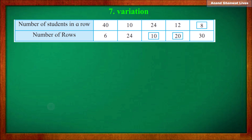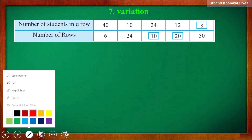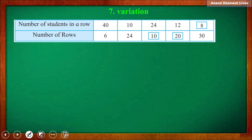The basic idea related to this chart: the value of number of students in a row changes from 40 to 10, meaning it decreased, then number of rows increased. If the first quantity is divided by 4 (40 ÷ 4 = 10), then the other is multiplied by 4 (6 × 4 = 24). When the first quantity increases from 10 to 24, the other quantity decreases from 24 to 10. If one quantity decreases the other increases, and vice versa.